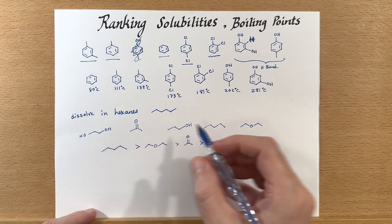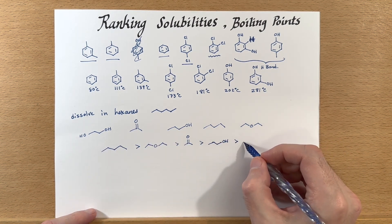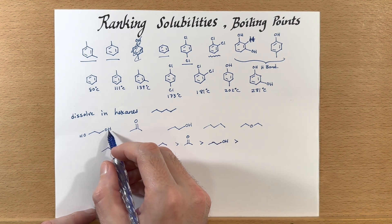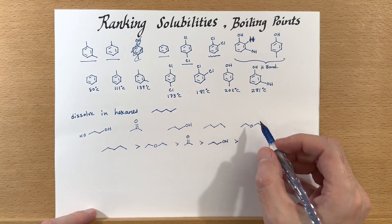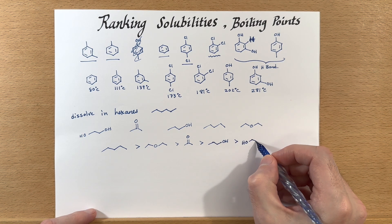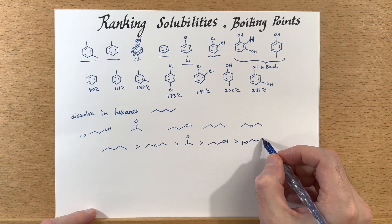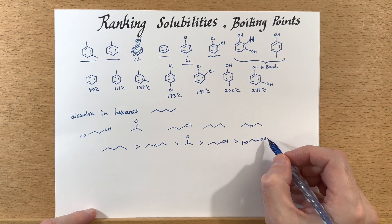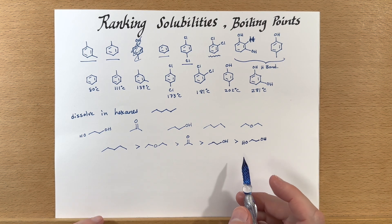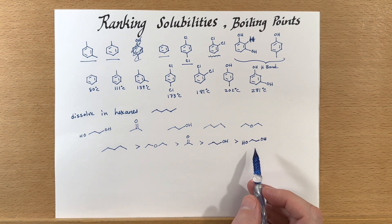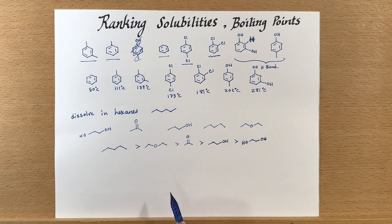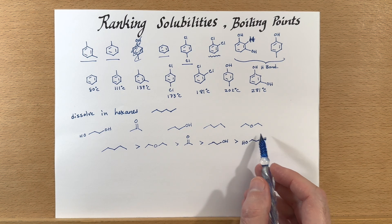1-Pentanol has one hydrogen bonding group, so it should be more soluble in hexanes than ethylene glycol. Ethylene glycol should be the least soluble.